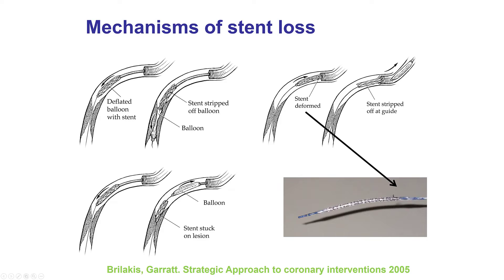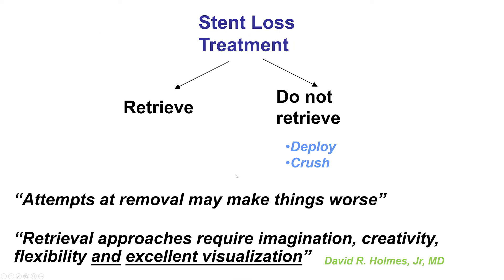This is one of the mechanisms of stent loss — the stent cannot be advanced through the lesion, or in this case it got stuck in the old stent, and when trying to retrieve it, the stent remained in the vessel while the balloon came back. In cases of stent loss, there are two approaches: try to take the lost stent out, or leave it and either deploy it or, if it's deformed, crush it with another stent. Sometimes leaving and deploying or crushing the stent may be preferable to retrieval, especially if it's not in a sensitive location such as the left main or a major bifurcation.